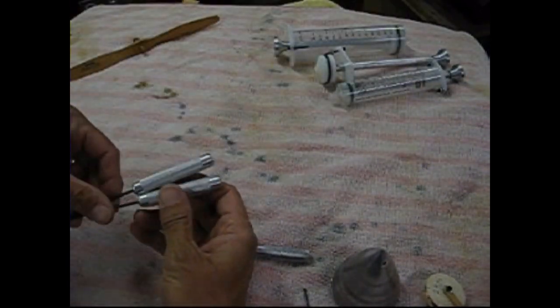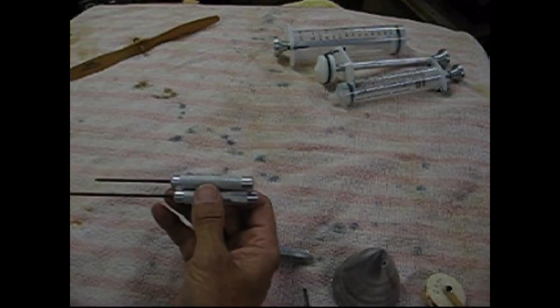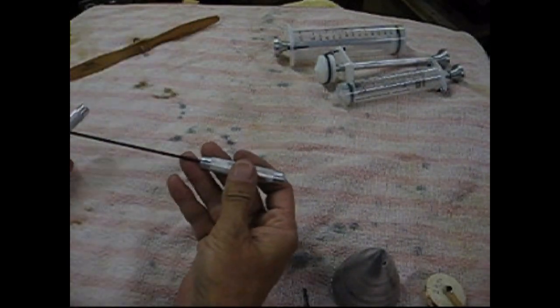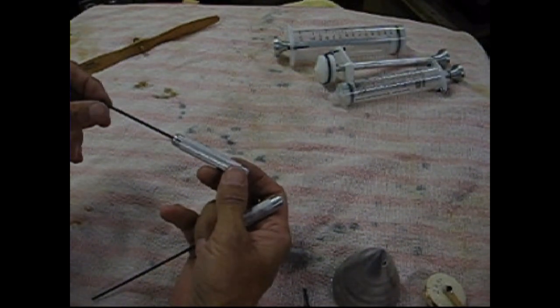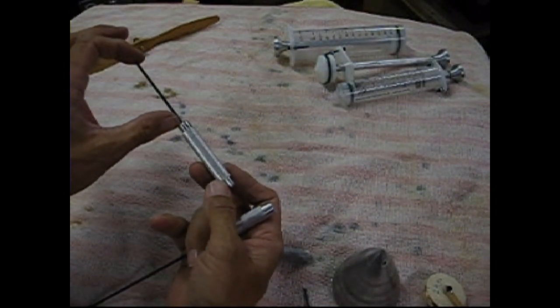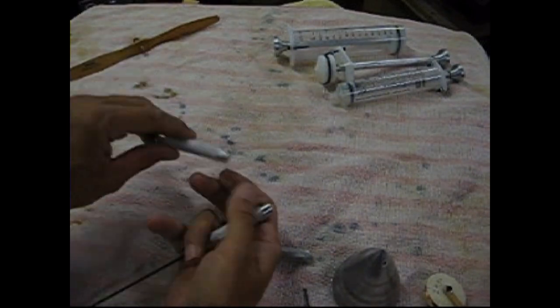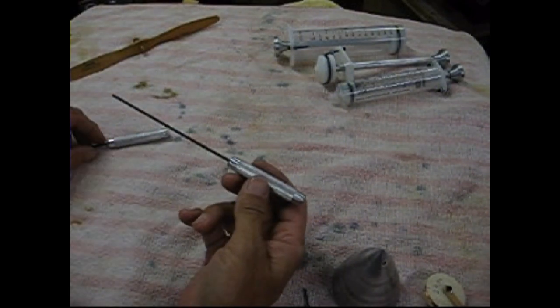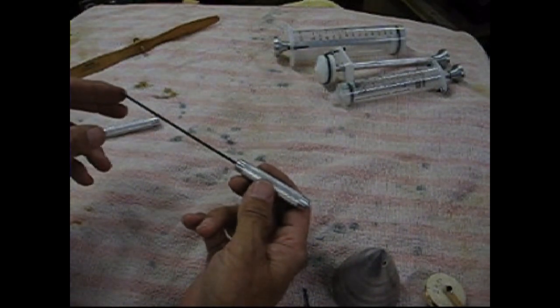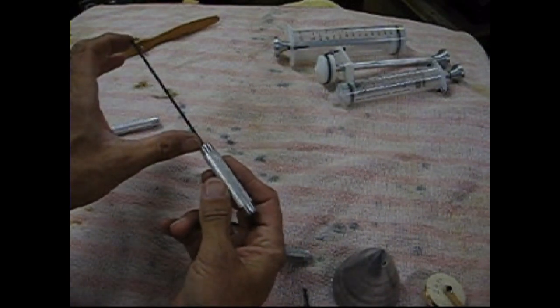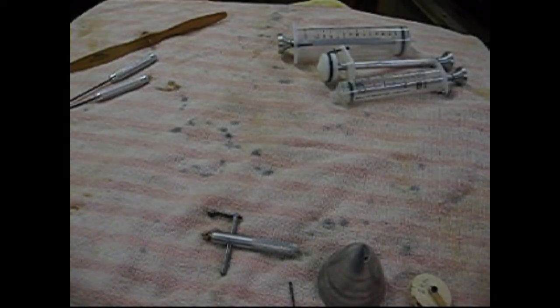We have our ball drivers. Now we're featuring the short and long version. The short version comes in several different sizes. The shaft on this is approximately three inches long. The long one comes in the 5/64, 3/32, and 7/64 only. It's about five inches long.